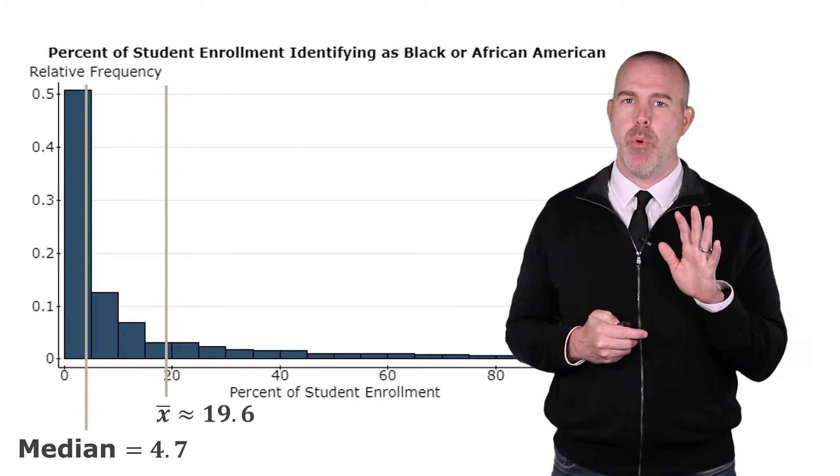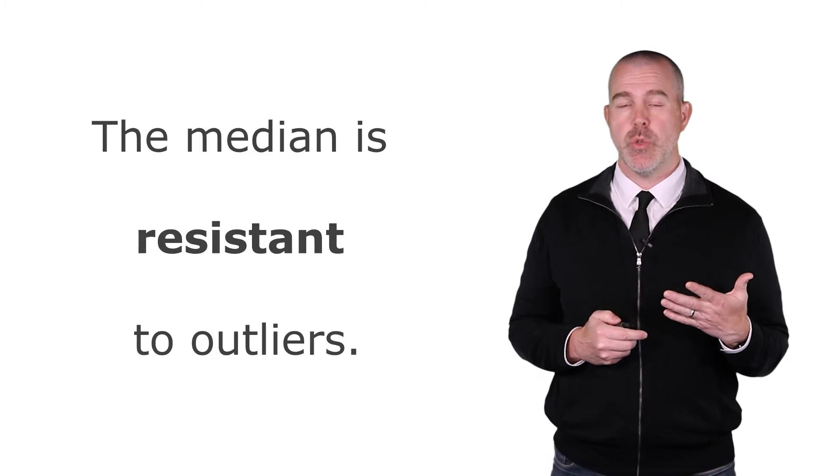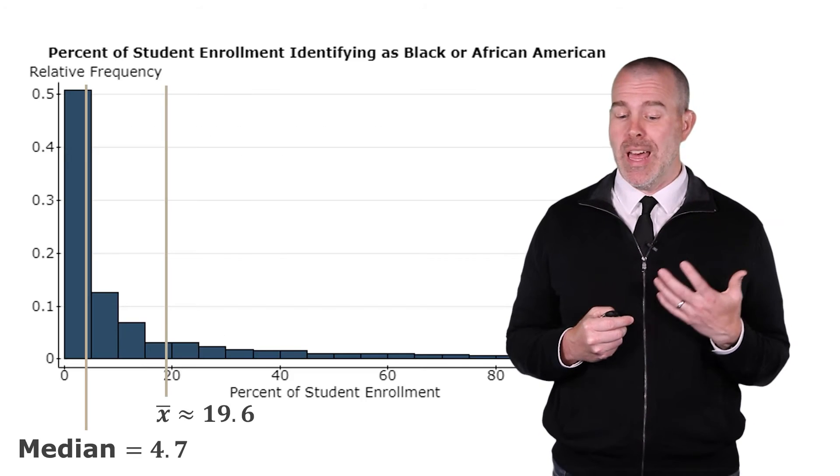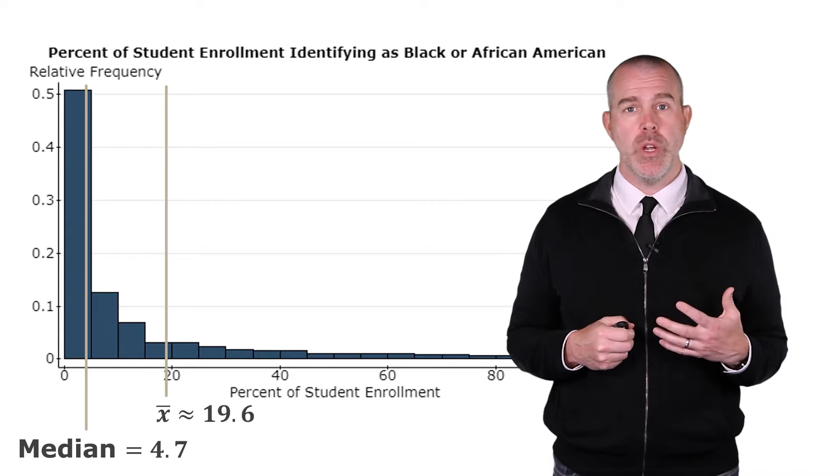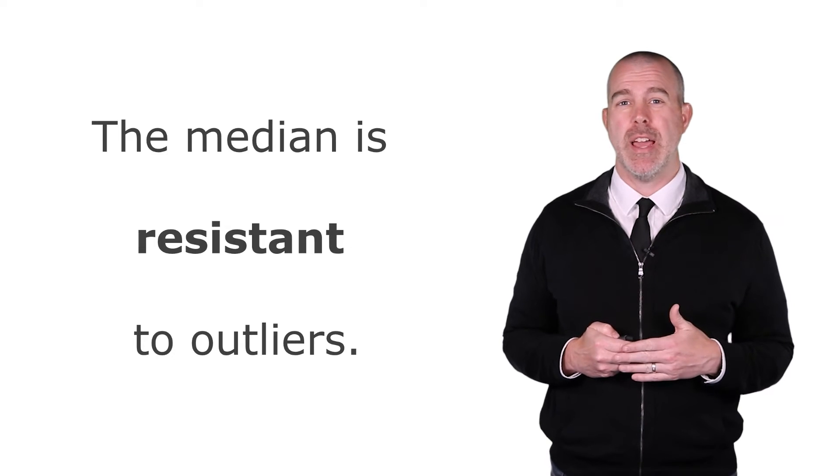That's because these values way over here on the right pulled the mean up and made the mean higher. This is a really important fact that the median is resistant to those outliers. So if you have data that are skewed, like this variable is pretty skewed, then you want to use the median because it's resistant to outliers.